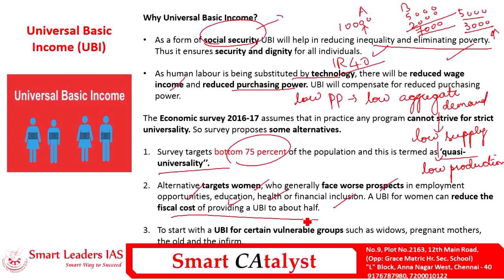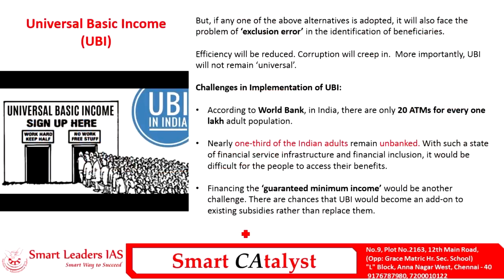The third alternative is to target vulnerable and marginalized people like widows, pregnant mothers, and the old and infirm. However, focusing only on these alternative methods creates a high probability of exclusion errors, which violates the very basic foundation of UBI as a universal, unconditional cash transfer. These exclusion errors are caused by discretionary decision making, which allows corruption to creep in and reduces efficiency. These are the problems associated with alternative models of UBI.